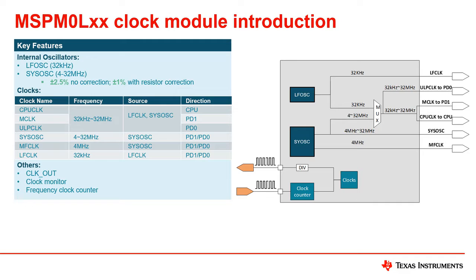Since the max operating frequency of this series is only up to 32 megahertz, there is no PLL module in the clock module. Although external crystals are not supported on the M0L series, SISOSC is an outstanding internal high-precision oscillator, sufficient for most applications. SISOSC achieves an error of plus or minus 1% over the full temperature range with an external correction resistor, or plus or minus 2.5% in the full temperature range without any external components.